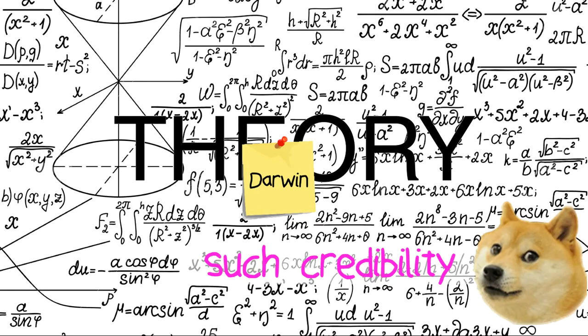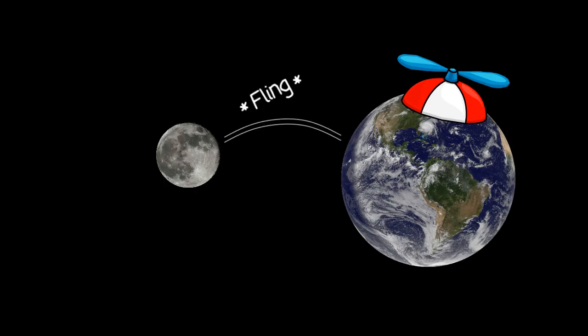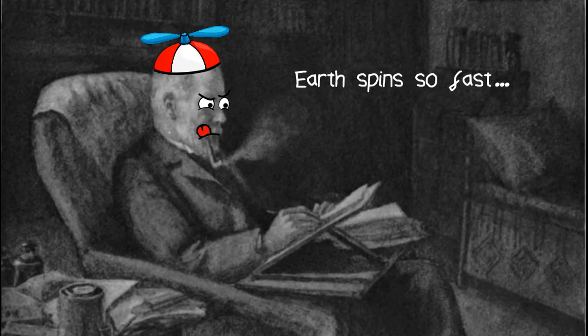Perhaps it was due to the fact it had the name Darwin attached to it, or that there were many calculations involved that this theory gained such credibility, but when you start to look into it, it falls apart pretty damn quickly. Now Darwin Jr. figured out that in order for the Earth to fling out a moon, it would have to be spinning so fast that an Earth day would only last 2.5 hours.